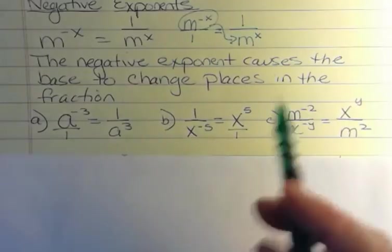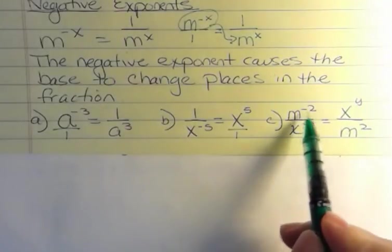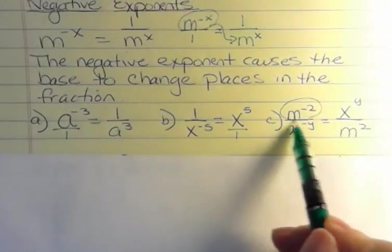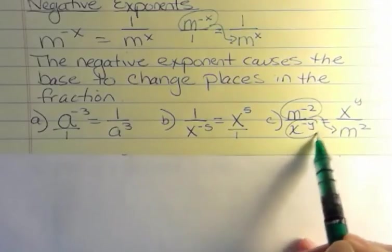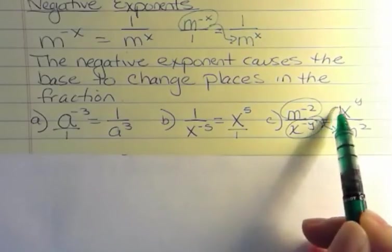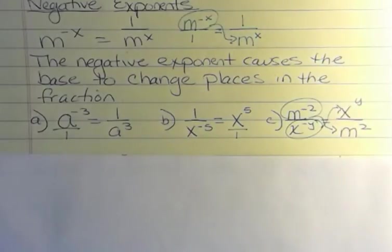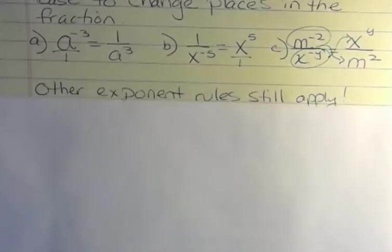So in part c, we can see that the m to the negative 2 that was on the top, it shifts to the bottom. And the x to the negative y that was on the bottom shifts to the top. We can move anything that's got a negative exponent. We just change its place in the fraction, and when we do, the power becomes positive.